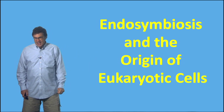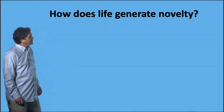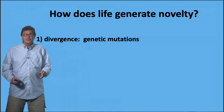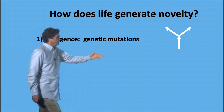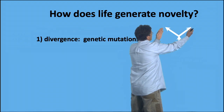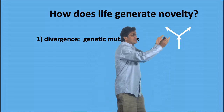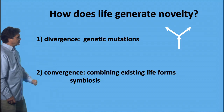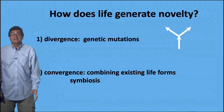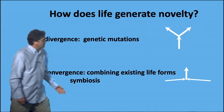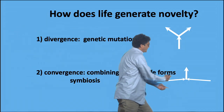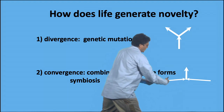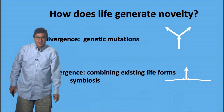How did life generate diversity? You'll learn in high school that there's divergence — you have genetic mutations, and basically there's a picture that looks like this: you come along, you have mutation, and then the two things go separately, and so you've generated novelty by separating one species. But you also can have convergence, and that's when you combine existing life forms. One life form and another come together to form a new life form. And notice it doesn't take any time to mutate and diverge — it's almost immediate when they come together and start living together.